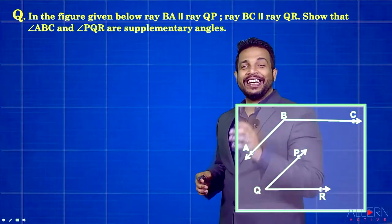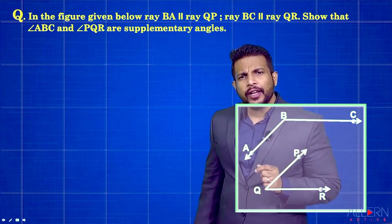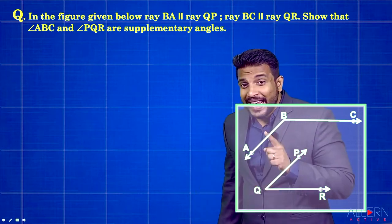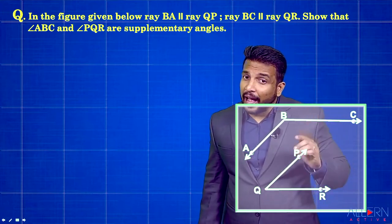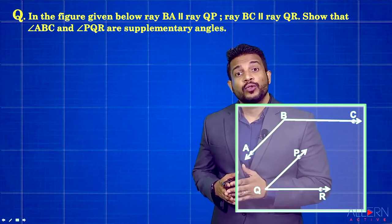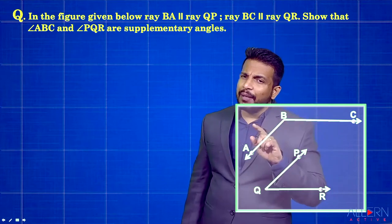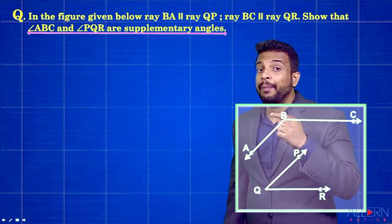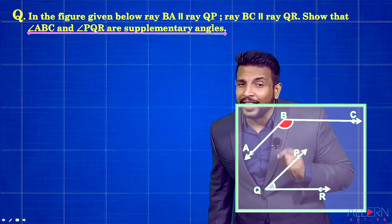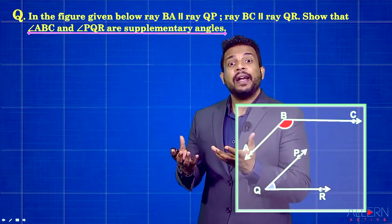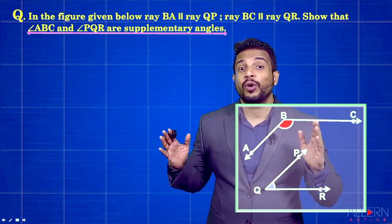Let's do a very interesting sum. In the figure given below, we have ray BA parallel to ray QP, and ray BC parallel to ray QR. So there are two pairs of parallel lines given to us. We need to show that angle ABC and angle PQR are supplementary angles. When we say supplementary angles, we know that the sum has to be equal to 180 degrees.